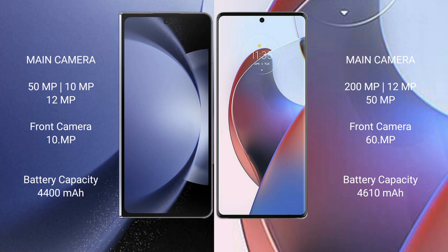Samsung Galaxy Z Fold 6 has a 4400mAh battery with 45W fast charging support. Motorola AX 30 Ultra has a 4600mAh battery with 125W fast charging support.